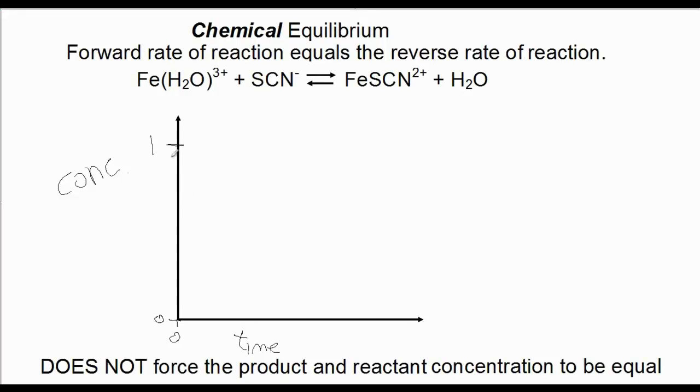What I want to show on this graph are how the concentrations of one reactant, thiocyanate, and one product, which I'm going to emphasize with red, the iron thiocyanate, how these two concentrations vary over time. That's not to say that the iron doesn't exist or the water doesn't exist. I'm just picking two items here, one reactant and one product.